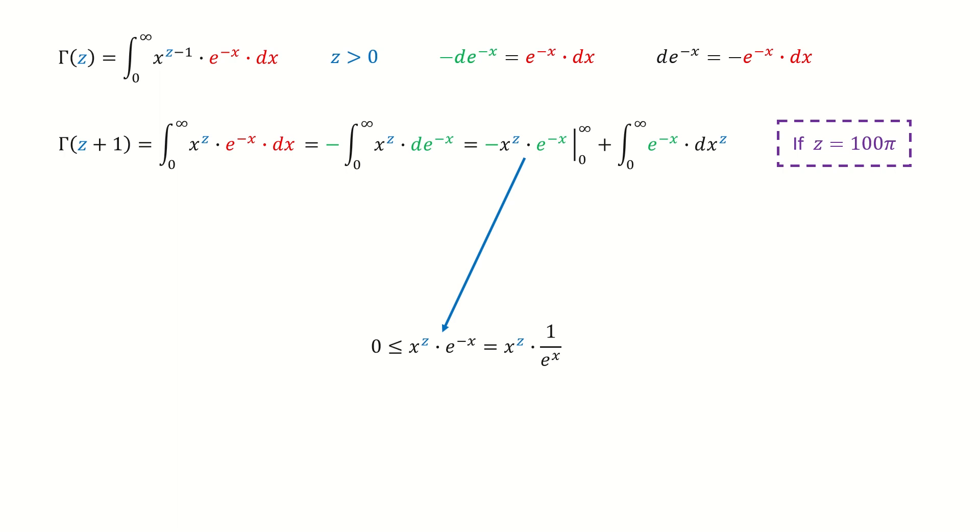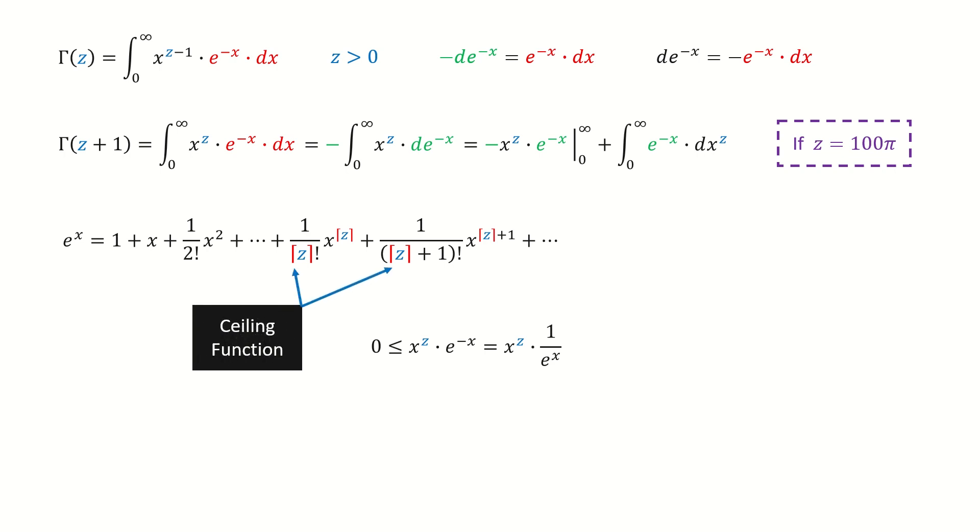First, we write this term into this way. Recall the Maclaurin series for the exponential function. Note here, this symbol is ceiling function, because z can take non-integers.